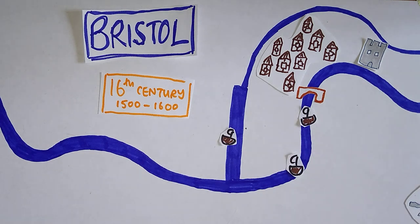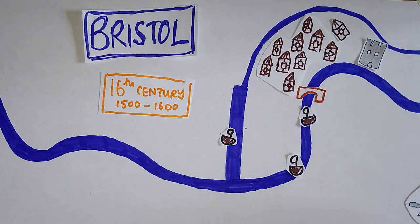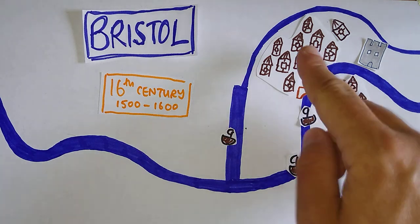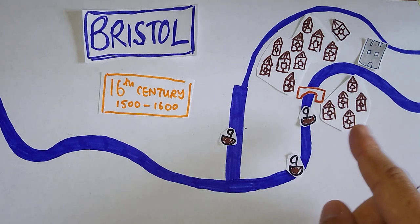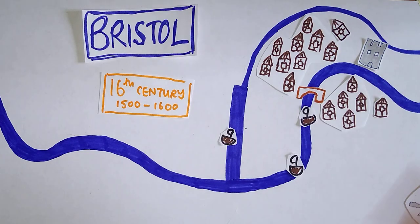Bristol, as a result of all that smuggling, actually does pretty well. And in the 16th century, it grows. And the town expands south of the River Raven into Redcliffe. And it's growing and growing and growing.